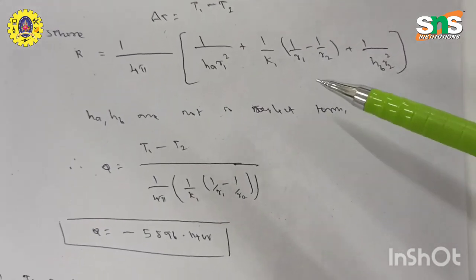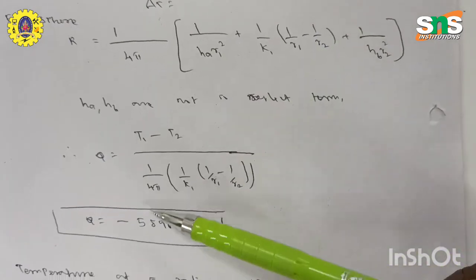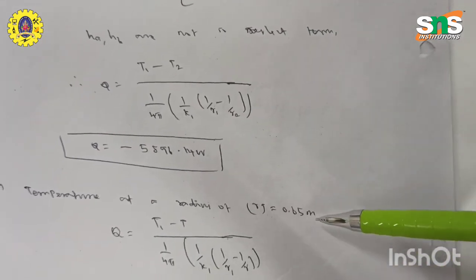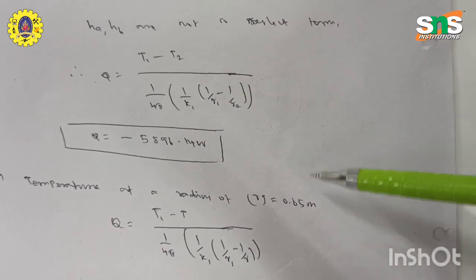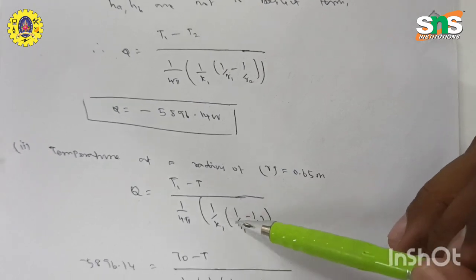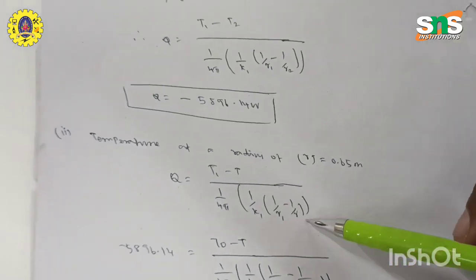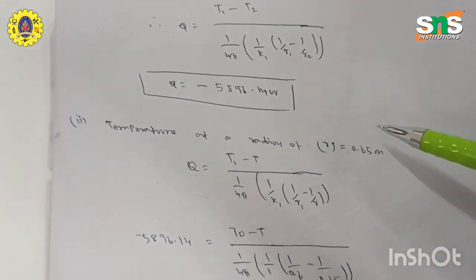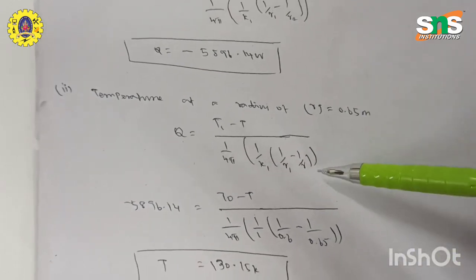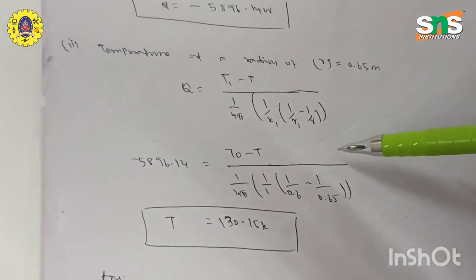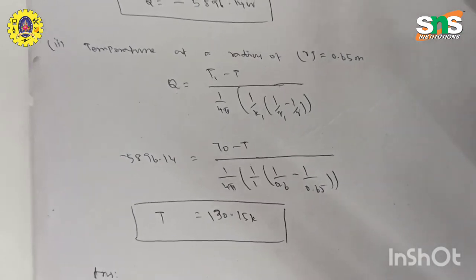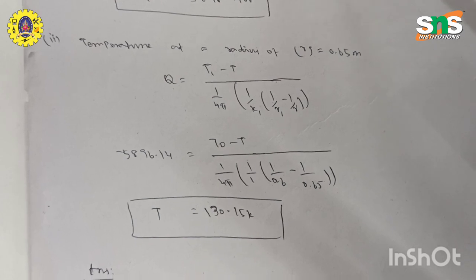Substituting all given data values into the resistance equation gives the final heat transfer rate. Then, using Q = (T1 − T) / [1/(4π) × (1/K1) × (1/R1 − 1/R)] and substituting values, we obtain the final temperature of 130.15 Kelvin at radius R = 0.65 m. This completes the spherical coordinates heat conduction problem.